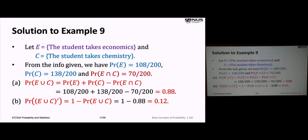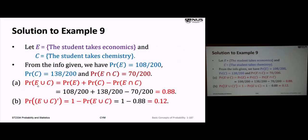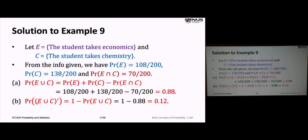Part A: the probability that a student takes economics or chemistry — probability of E union C. By property 5, that's the probability of E plus the probability of C minus the intersection. Those three quantities are already calculated, giving us 0.88.